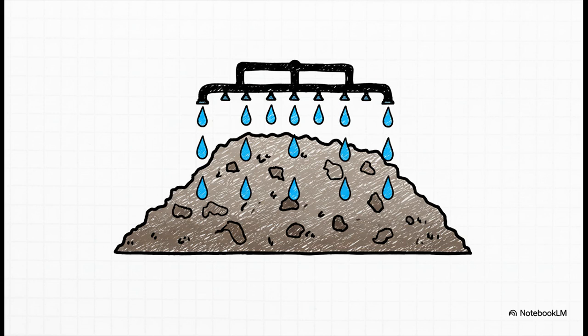So once the heap is built, a very, very dilute cyanide solution is slowly dripped all over the top. It's not a flood. It's a slow, steady, controlled process. The best way to picture it is like a giant industrial-scale drip coffee maker, where the water is slowly working its way through the grounds.